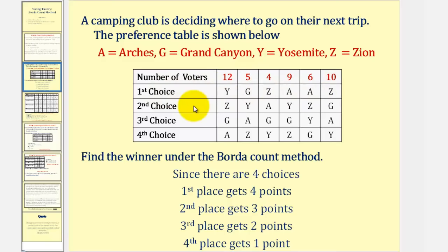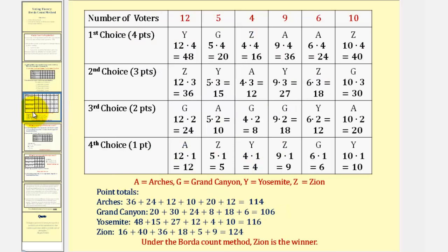Every vote in the second choice row is worth three points, and so on. So to find the total points, we'll set this up using a larger table. All these first place votes were four points each for each location. Looking at this first row, notice how twelve voters voted Yosemite first, so Yosemite receives twelve times four, or forty-eight points. Looking at the second column, five voters voted the Grand Canyon first, so the Grand Canyon receives five times four, or twenty points. The second choice row is worth three points for every vote, the third choice row is worth two points, and the fourth choice row is worth one point.